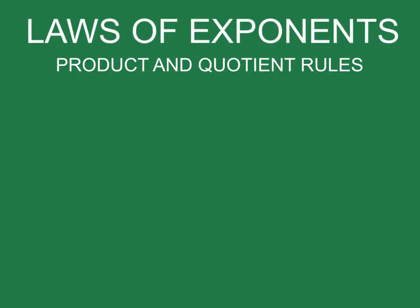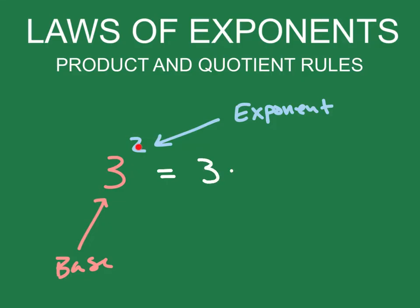So let's talk about what an exponent is. I'm going to write out the number 3 to the second power. We call 3 our base and 2 is our exponent. The exponent tells us how many times we are going to multiply the base by itself. So when we do this, we end up getting that this is 3 times 3, which gives us 9.